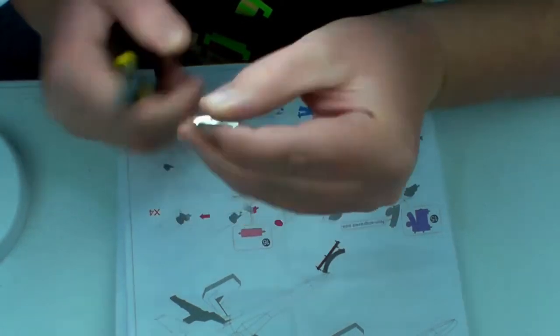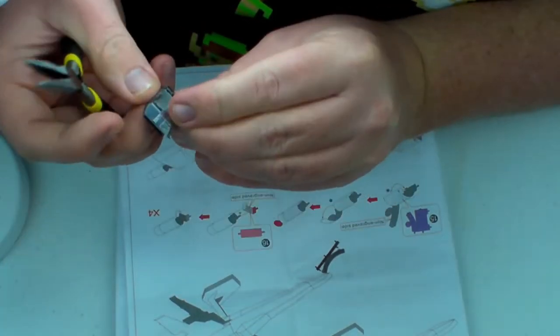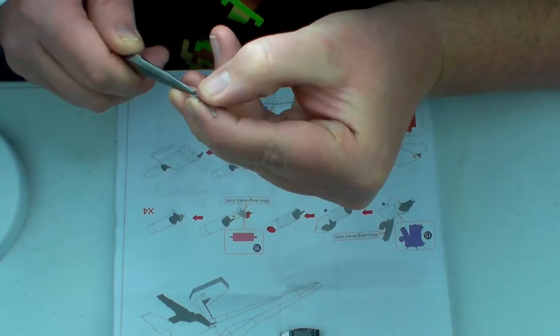You basically repeat the steps for the other three engines. The first two are exactly the same. The second two are mirrored.